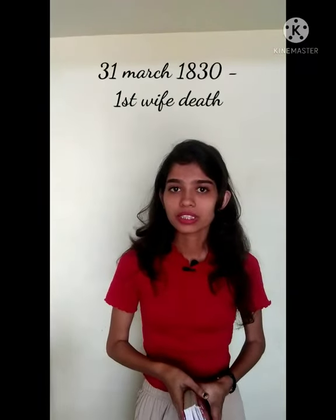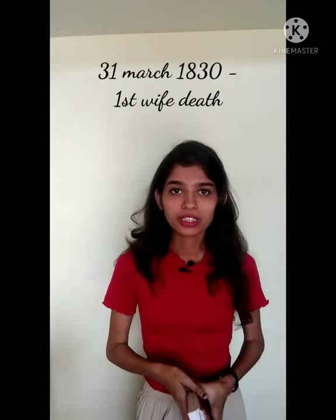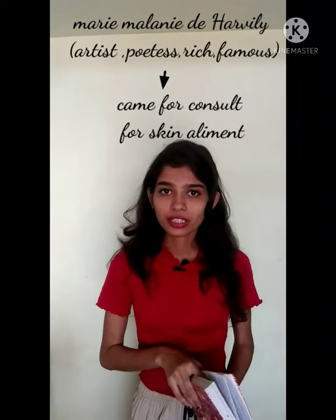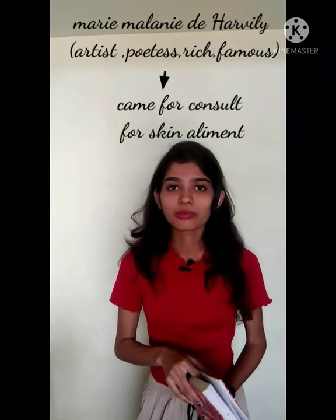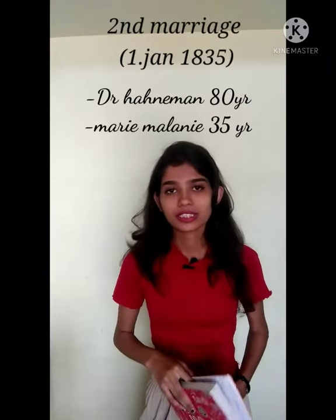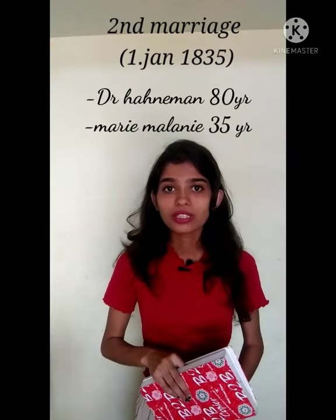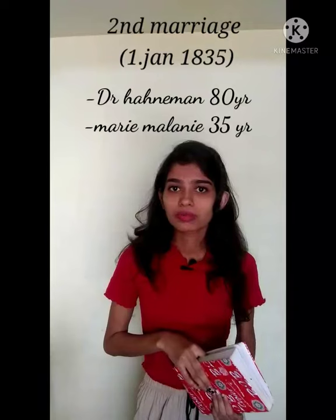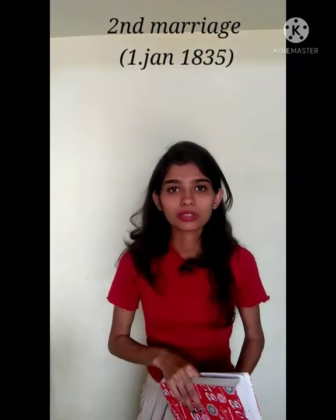On 31st March 1830, his first wife died — Henriette. In 1835, his first wife tried to get centers and can describe the doctor's age. When Henriette died in 1835, he remarried a second wife.